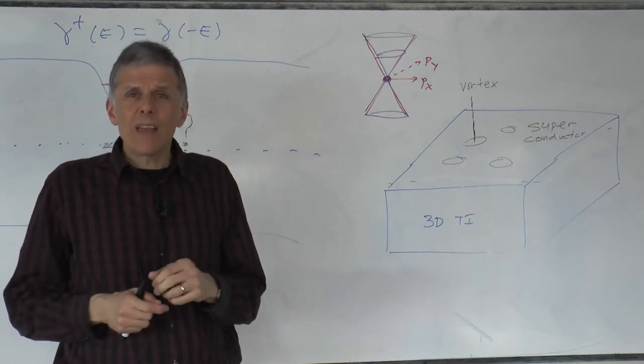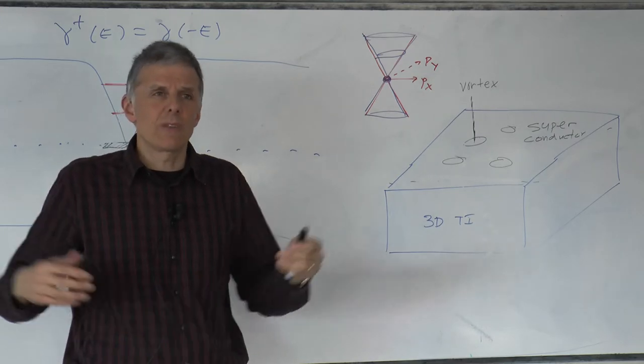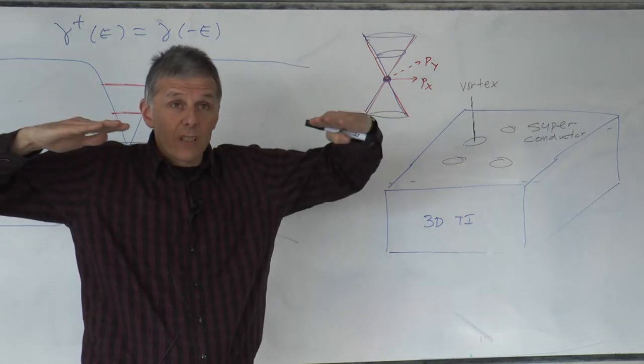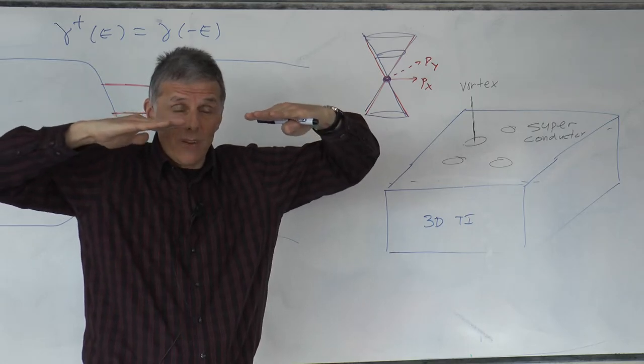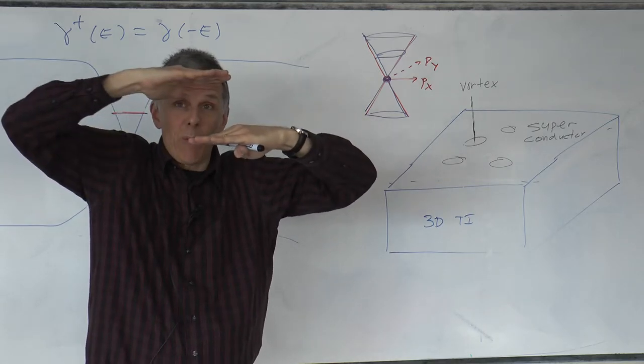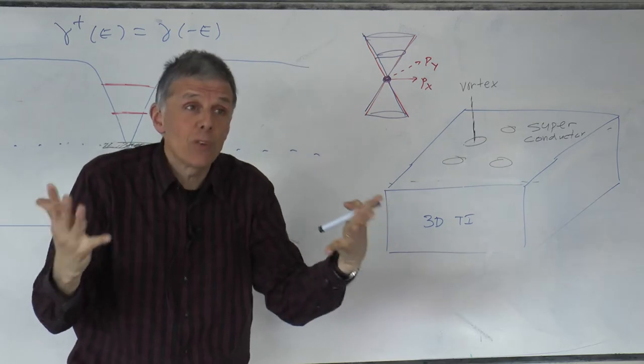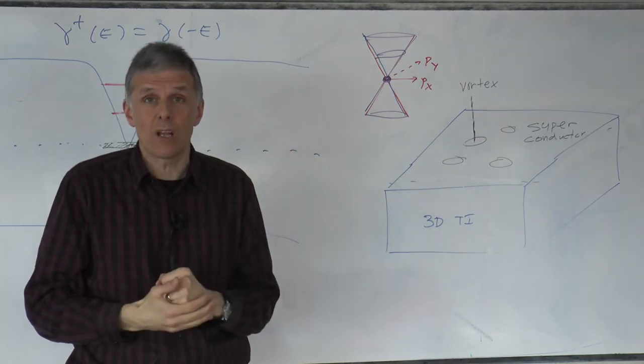But if they come close together, that's not good, because if they come close together then I have two of these states at zero coming close together, they might couple and then one will go up and one will go down, and this whole protection which relies on the fact that you have just one state at zero is lost.